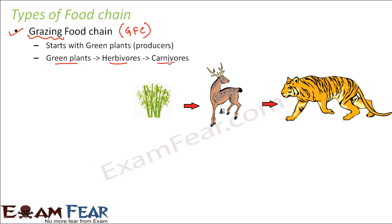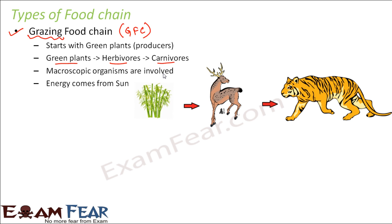It is not necessary that only three organisms are involved in a GFC — there can be a primary carnivore, secondary carnivore, tertiary carnivore, and so on. The GFC always starts with plants and ends with carnivores. Only macroscopic organisms are involved; microscopic organisms like bacteria and fungi are not. Energy comes from the sun, with the exception of deep sea ecosystems.